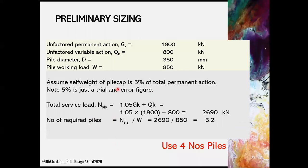First, we carry out preliminary sizing for the pile cap. Assume self-weight of pile cap is 5% of total permanent action. It is to note that the 5% is just a trial and error figure. From this assumption, we can obtain the total service load using 1.05GK plus QK. We can obtain the number of required piles by dividing the end SLS by pile working load. We need to always round up the value we obtain, say 3.2 in this case, and we can provide 4 numbers of piles.